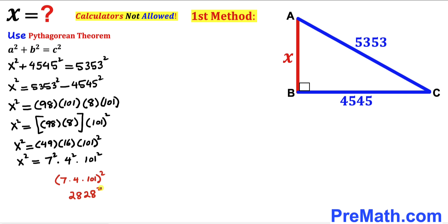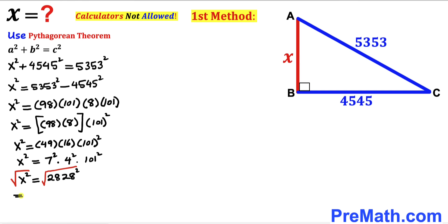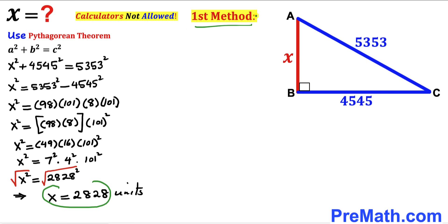So x² = 2828². Taking the square root of both sides, our x value turns out to be 2828 units. Thus x = 2828 units by using the first method.